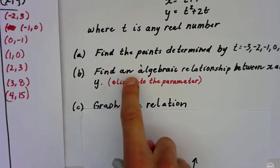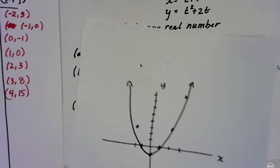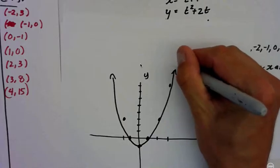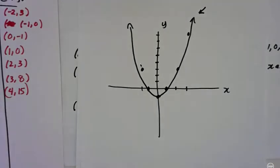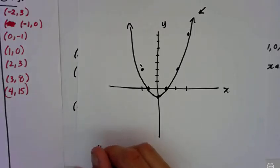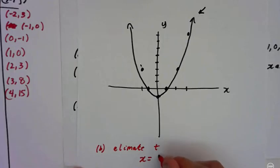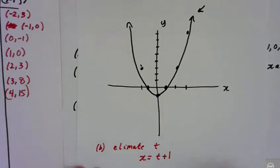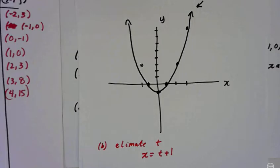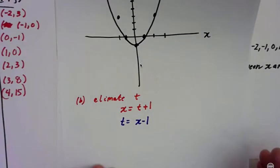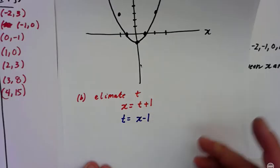So what we're going to do is when it says find the algebraic relationship, we are going to find this equation, y equals. So what that means is eliminate the parameter. We're going to eliminate t. So in part B, we're going to eliminate t. We know that x equals t plus one. So if I solve that for t by subtracting one from both sides, I know that t equals x minus one.